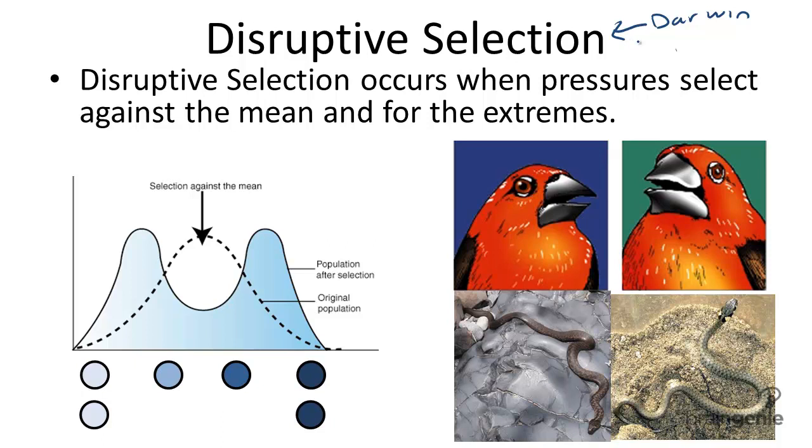One is disruptive, another is directional, which we talk about in another video, and another called stabilizing. And these are pretty easy to remember.